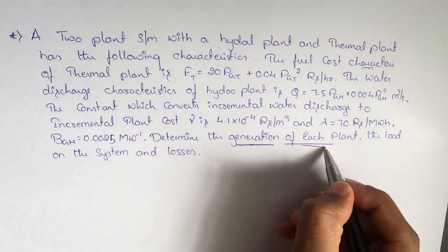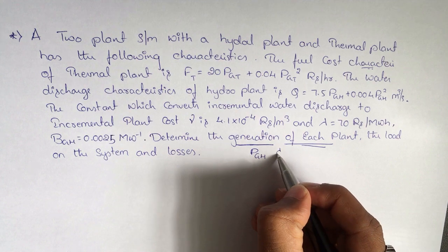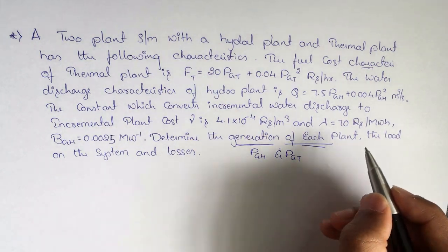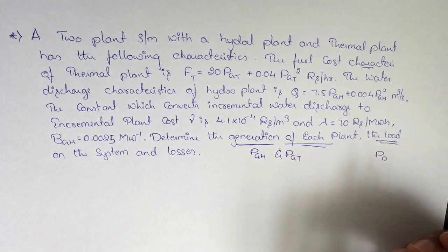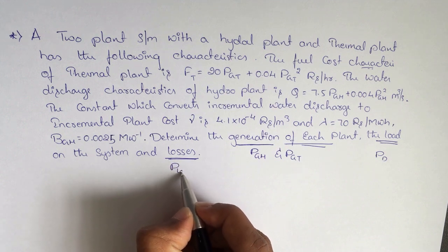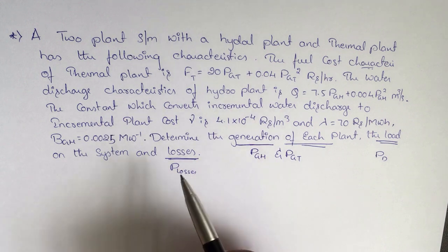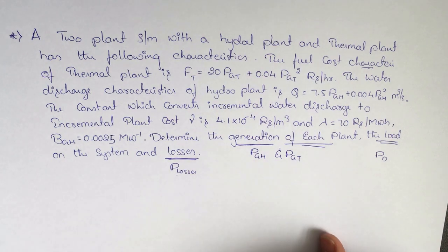The generation of each plant is P_GH and P_GT. The load is P_D, and the losses are P_losses. These four parameters are what we are going to identify in this problem. Let's start.